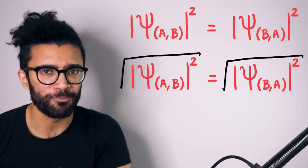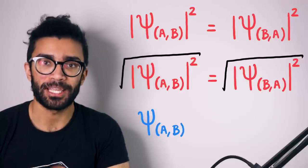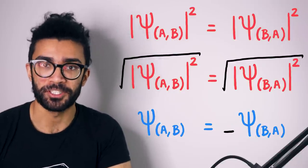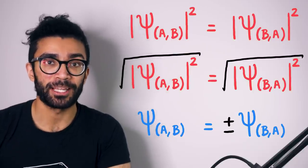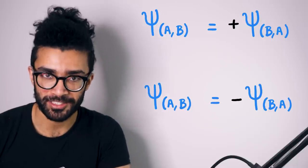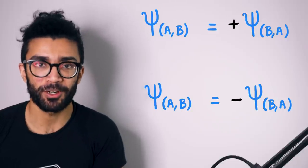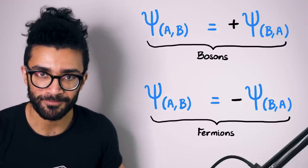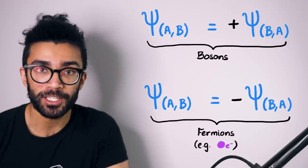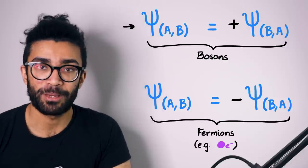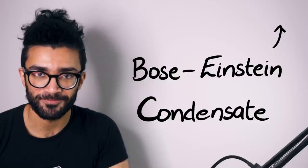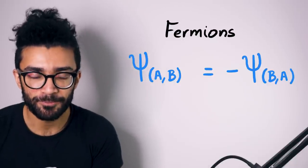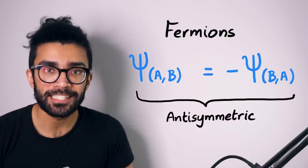When we take the square root of both sides of this equation, we find that the wave function for orientation a-b must either equal the wave function for orientation b-a, or it must equal minus the wave function for orientation b-a. In other words, the wave function can be identical under particle exchange, or it can become negative under particle exchange. These conditions refer to two different types of particle: the first case refers to a boson, and the second case refers to a fermion. Fermions are indistinguishable particles whose wave function becomes negative under particle exchange — this is also known as an anti-symmetric wave function.